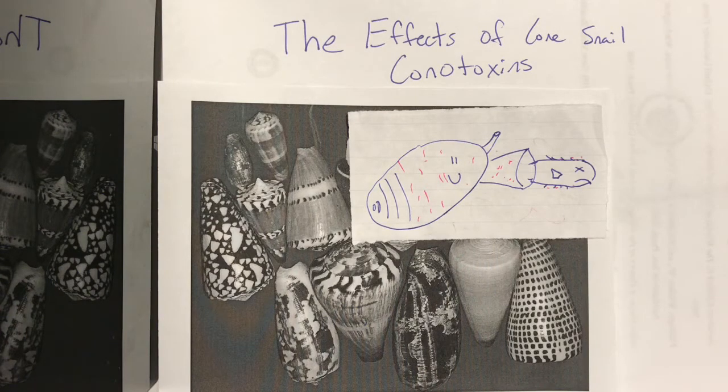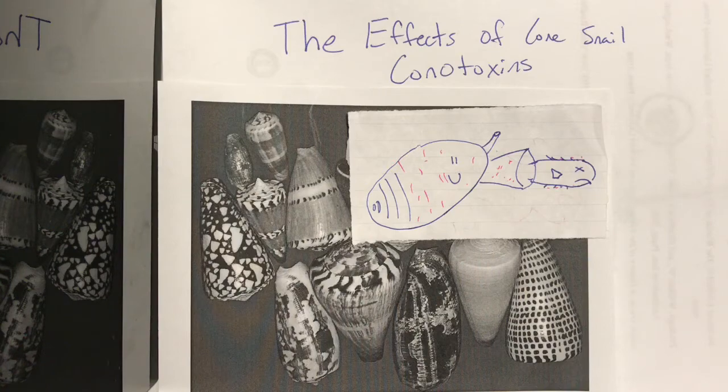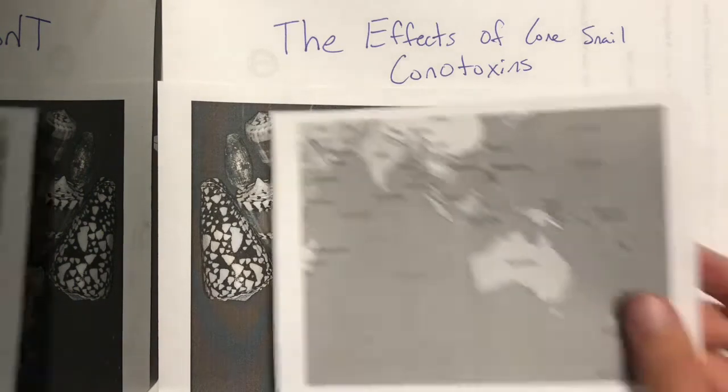There are over 800 different species of cone snails, but we are going to focus on the conus textile in particular. The conus textile is a carnivorous snail that lives in the Indo-Pacific region, Australia, and the Indian Ocean.